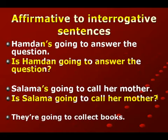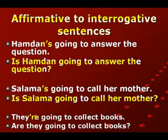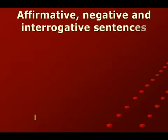مثال ثالث: They're going to collect books - يعني هم بيجمعون الكتب. عندنا اختصار: جمعنا they وare مع بعض فأصبحت they're. الجملة السوالية بتكون: Are they going to collect books? يعني هل هم بيجمعون الكتب؟ الحين نتكلم عن affirmative وnegative وinterrogative sentences في be going to form - نأخذ جملة ثابتة، ونتغيرها إلى منفية، وبعدين نتغيرها إلى استفهامية.